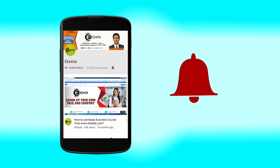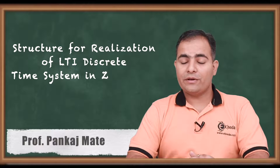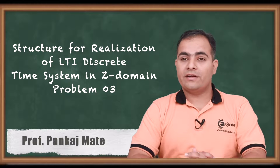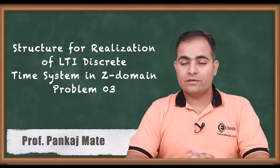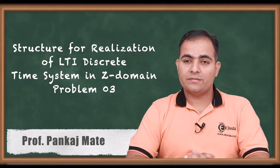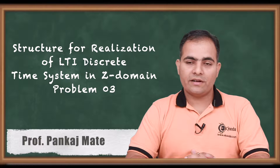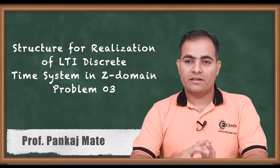Click the bell icon to get latest videos from Ikeda. Hello friends, today we are going to study the last numerical based on direct form 1 and direct form 2 — problem number 3. As I told you, the first 3 numericals are based on DF1 and DF2, and the next 3 are cascade and parallel. So please listen to this question carefully.